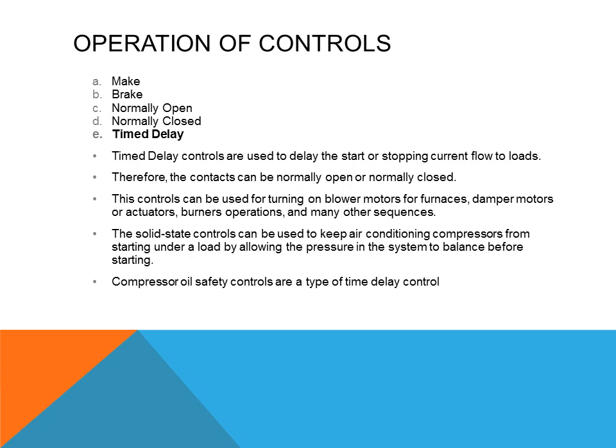There are many different types of time delay switches. One type delays air conditioning systems from operating until pressures have stabilized or equalized in the system, preventing motor overloads. Another type, used for large semi-hermetic compressors, is an oil safety control — sometimes called a net oil safety control. It senses the oil pressure of the compressor; if oil pressure does not reach a certain level, it will shut the system down. That type of time delay is timing to turn the system off rather than on.